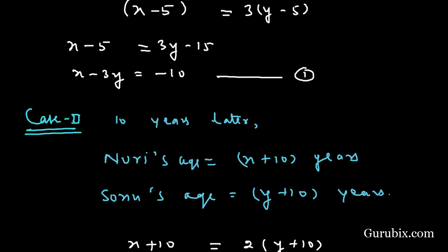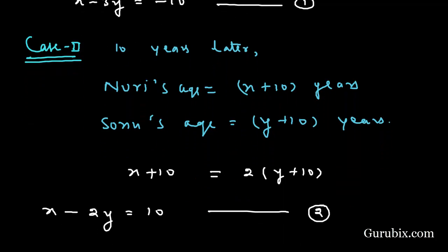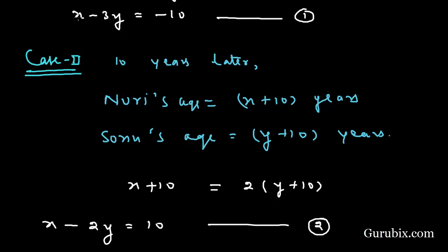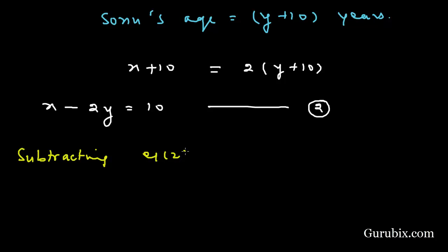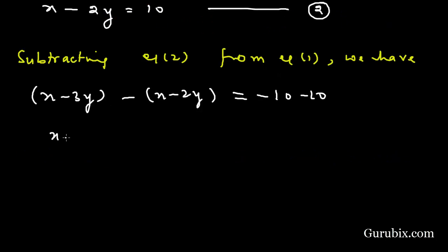For that we shall subtract equation number 2 from equation number 1 because the coefficient of x in both equations are same. Subtracting equation 2 from equation 1, we have x minus 3y minus x minus 2y equals minus 10 minus 10. It will be x minus 3y minus x plus 2y equals minus 20. We shall cancel out minus x with positive x. Then we have minus y equals minus 20. This means y equals 20.